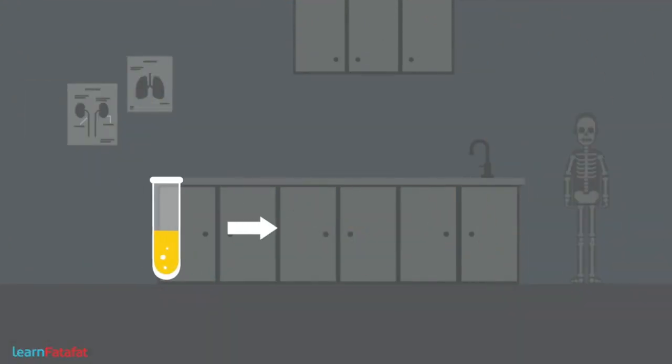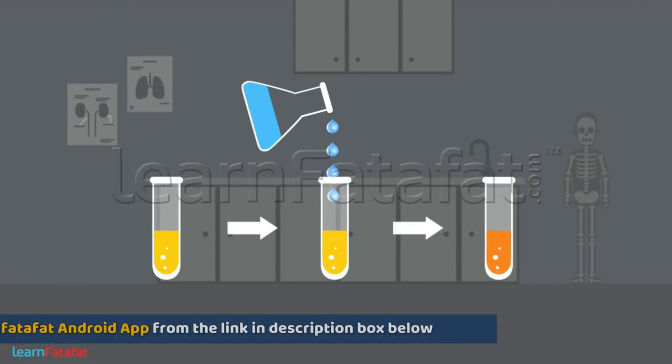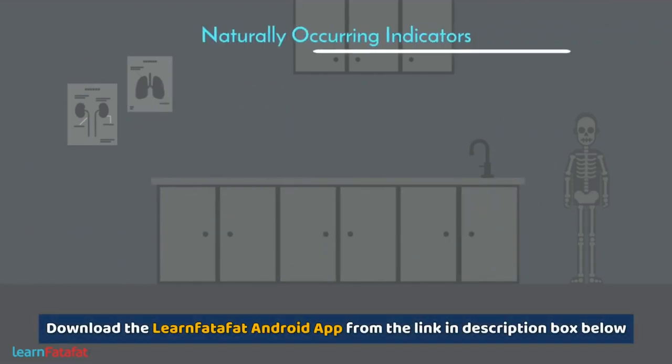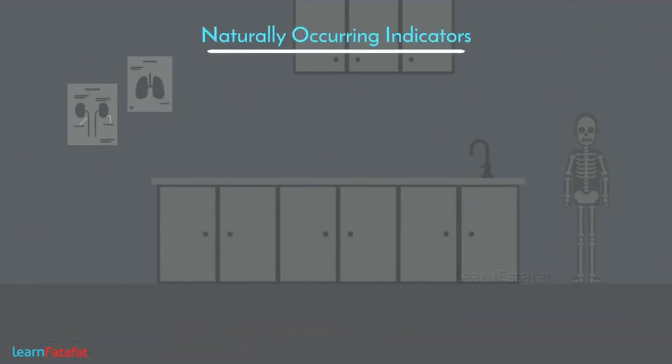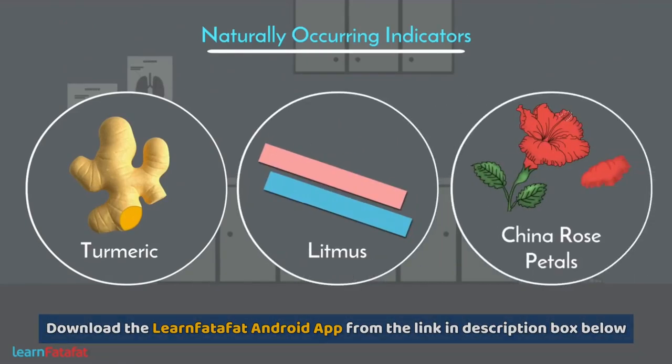There are certain substances which on mixing with other substances cause change in color. Such substances are called indicators. Some of the naturally occurring indicators are turmeric, litmus, china rose petals, etc.